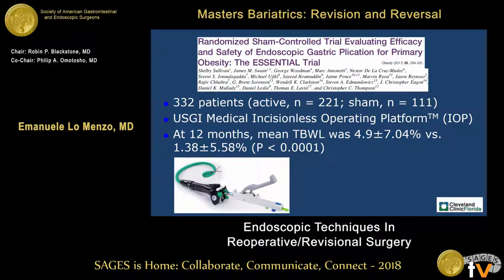Last but not least of these devices is the USGI device for the ROSE procedure. This is the multicenter trial evaluating the efficacy of this device, which short-term was effective, though there were more complications. At 12 months there was weight loss, but again, the durability of these procedures is still in question.